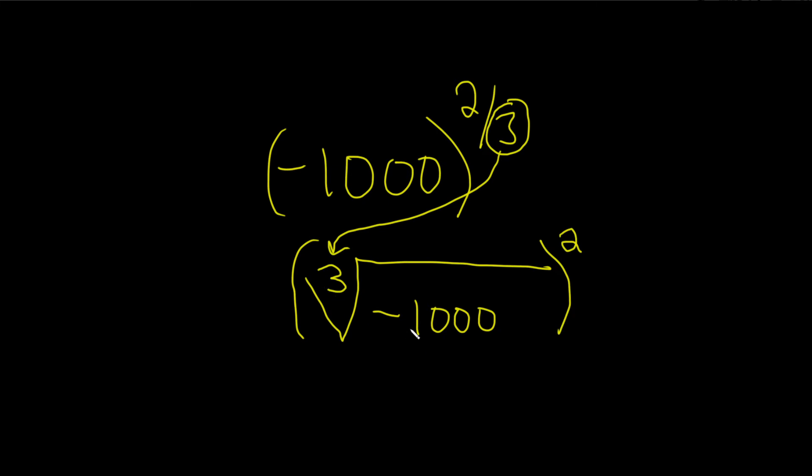Because the 3 is odd, the negative hangs out. So it's going to be negative. The answer that we get in the next step is negative. So we're trying to take the cube root of 1,000. That's 10, right? Because 10 to the third power is a thousand.